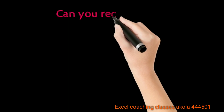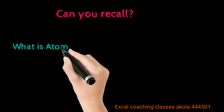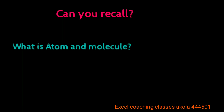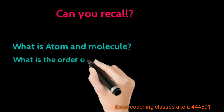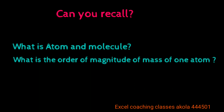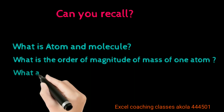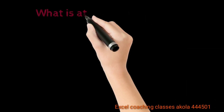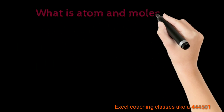The next part in our book is 'Can You Recall,' and there are some questions. The first question asks: what is atom and molecule? The second question: what is the order of magnitude of mass of one atom? The third question: what is meant by isotopes, and what are the isotopes of carbon? We will try to understand these three questions.